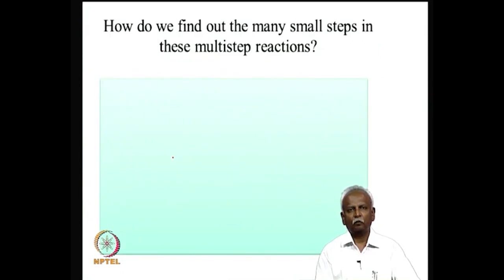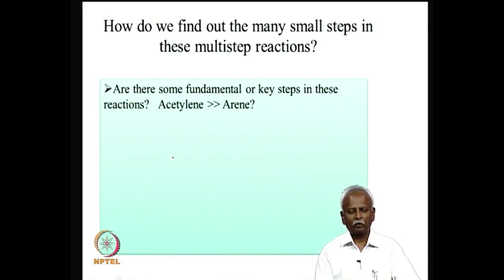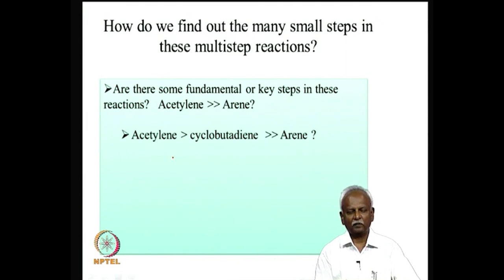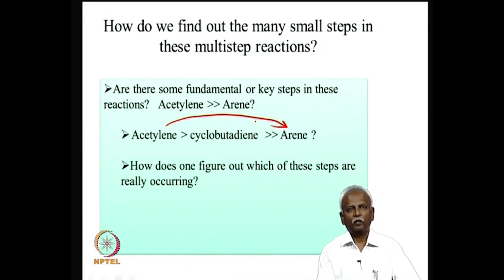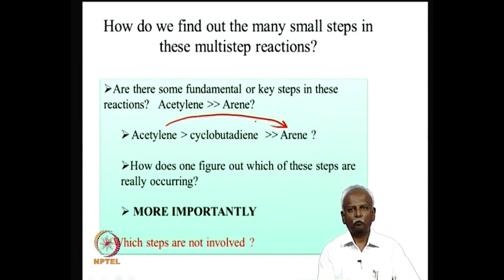We will classify organometallic reactions based on the organic transformations they carry out. It is important to understand the fundamental or key steps involved — for example, when stitching acetylenes to form an arene, does it go through cyclobutadiene as an intermediate or convert directly? Understanding which steps are really happening, and which are not, will help us design better catalysts and promote transferability.